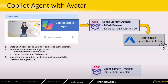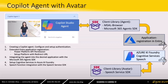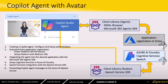As soon as the Copilot agent is prepared, we can use the Microsoft 365 Agent SDK to embed the agent onto the page or in an application. After that, we can set up the cognitive services in the Azure AI Foundry. With the help of the Speech Service SDK we can integrate the avatar into an application or on a web page.